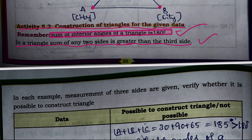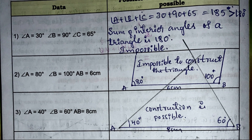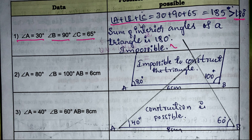Let's start with the first example. Given: angle A = 30°, angle B = 90°, angle C = 65°. First, we add them: 30 + 90 + 65 = 185°, which is more than 180°. So it is not possible to construct this triangle.